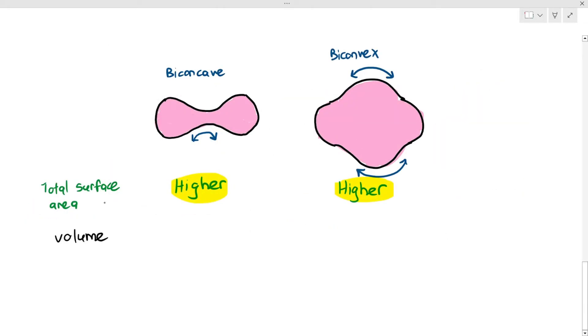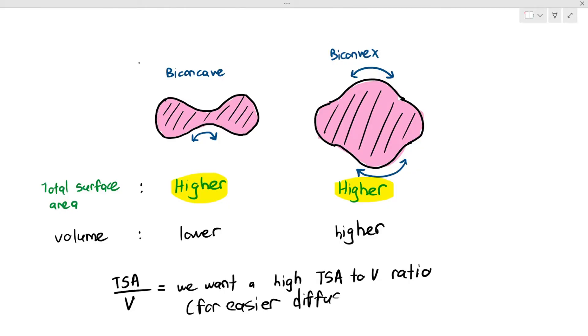Now, between the biconcave cell and the biconvex cell, when we compare their volume, you will notice that the volume within the biconcave cell is lower, and the volume within the biconvex cell is higher, as I have shaded in black, just to show you that how the space within the cells are different between the two of them. So in terms of total surface area, both of them have larger total surface areas, but in terms of volume, the cell on the left has a lower volume, and the cell on the right has a higher volume. Why do I care? The next thing we have to compare is the total surface area to volume ratio. We always want a higher total surface area to volume ratio for easier diffusion of substances. And in mathematics, if you want a high total surface area to volume ratio, the total surface area has to be high, but the volume has to be low.